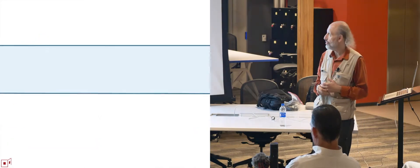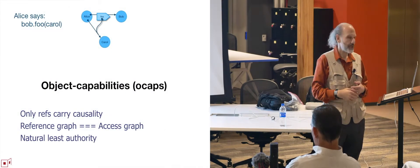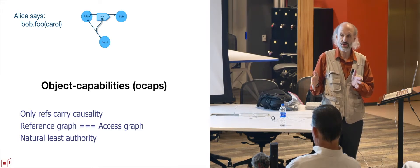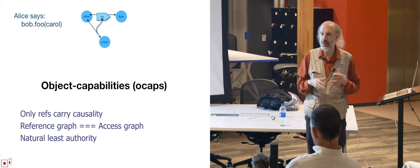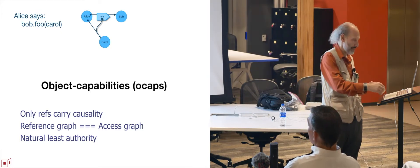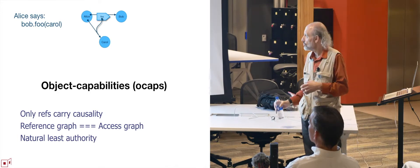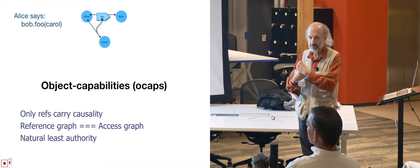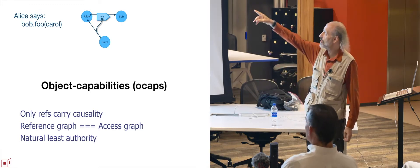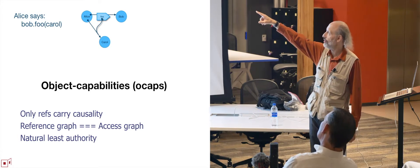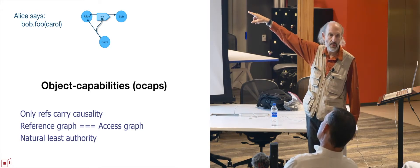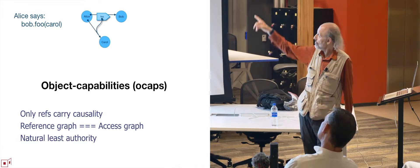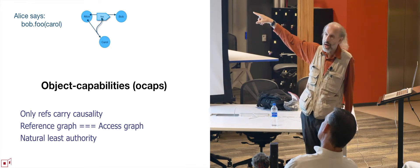Let's start with the world of objects. First we're going to work our way down — that will be the first part of the talk. Then I'll break for questions, then we'll come back and do the final part at the e-rights layer. The basic step of object-oriented programming is when object Alice says, for example, bob.foo(carol), invoking bob's foo method with carol as an argument. These thin arrows represent object references.